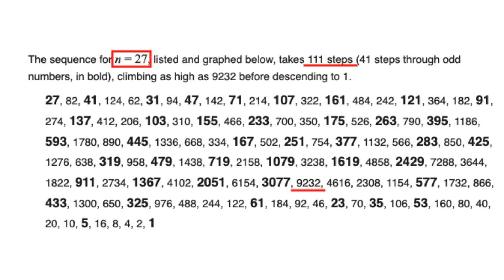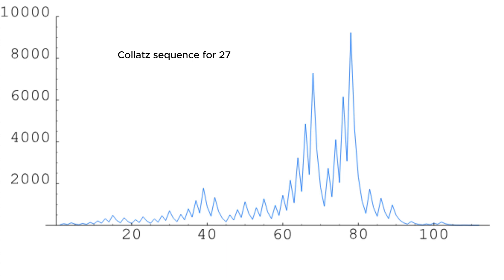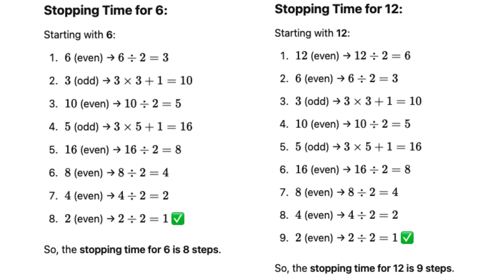Take the number 27. It takes a remarkable 111 steps to reach 1, climbing as high as 9,232 before finally descending. The length of time it takes for a number to reach 1 is called its stopping time, and these wildly varying durations hint at the conjecture's mysterious nature.